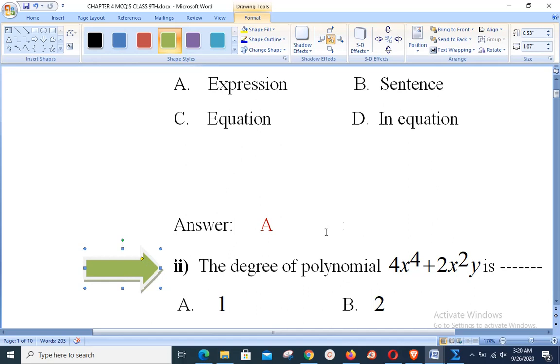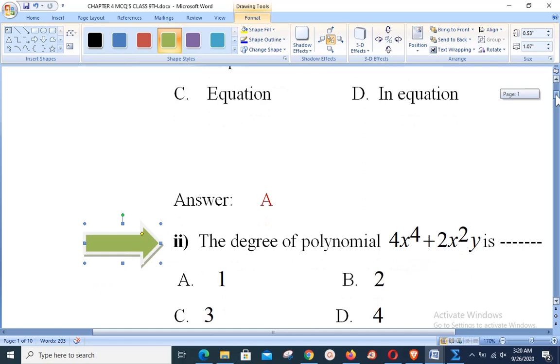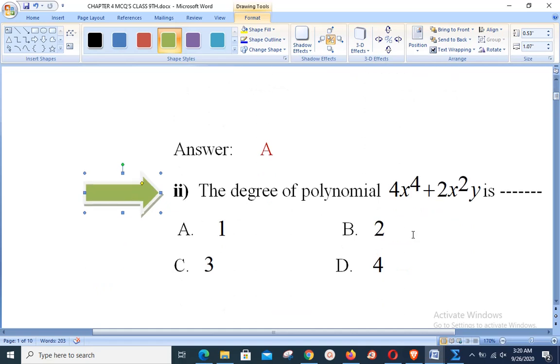Dear students, you must know the definition of polynomial. Polynomial is any algebraic expression in each of which the variable either has exponent 0 or any positive integer. Exponent of variable cannot be negative integer. It cannot be in the form of fraction. So what is the degree? Degree is basically the highest term.